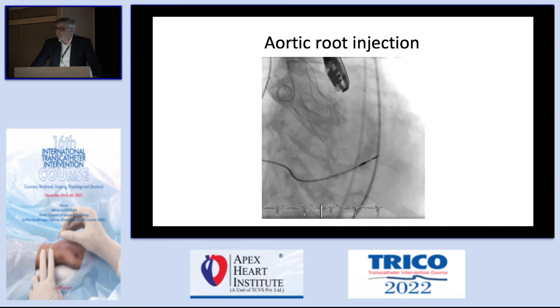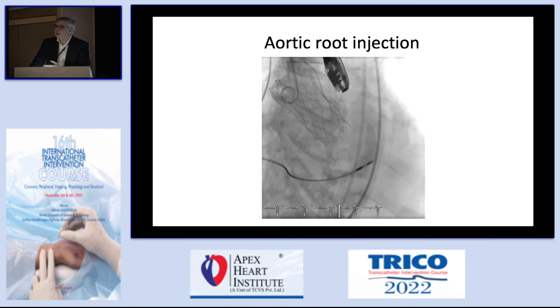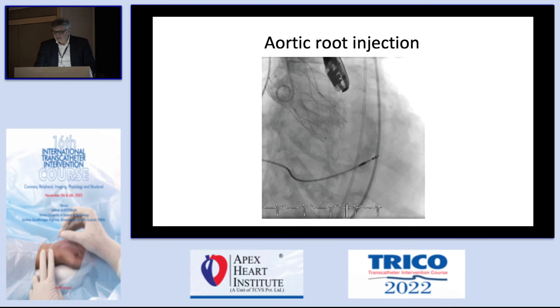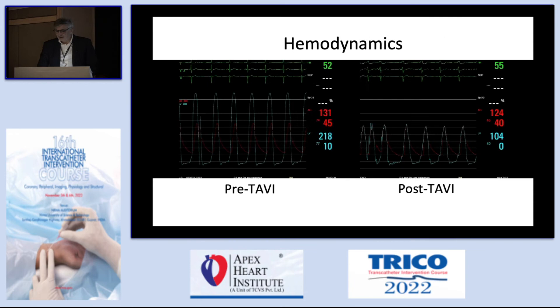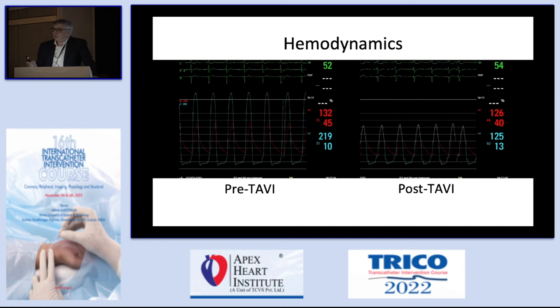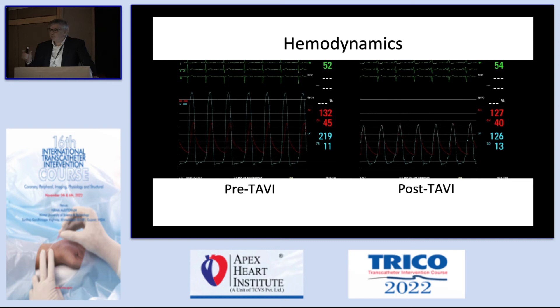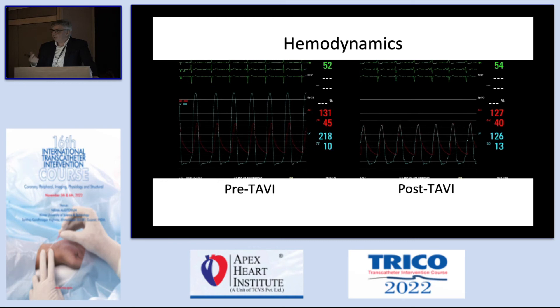After valve deployment, put the pigtail down and do an injection to see how much contrast leaks back to the LV — keeping in mind that this depends on pigtail position, injection volume, and stroke volume. Echocardiography in short axis lets you assess how much leak exists around the perimeter of the stent frame: less than 10% is mild, more than 30% is severe. You can also look at hemodynamics — compare diastolic pressure in the aorta and end-diastolic pressure in the LV before and after, which gives information about the degree of paravalvular leak.